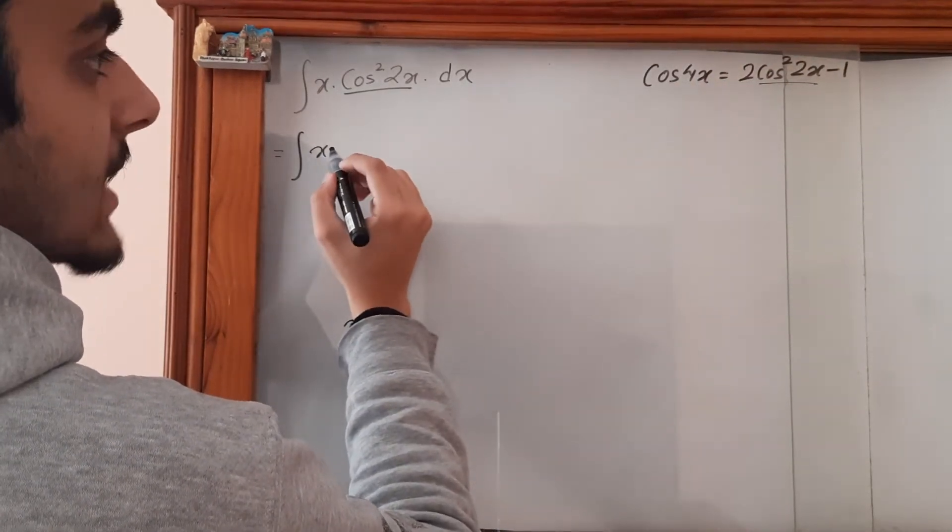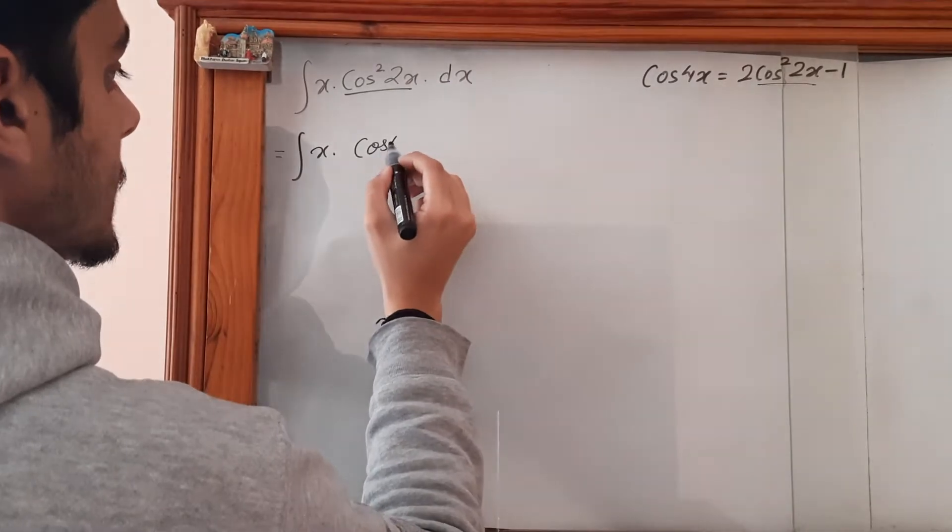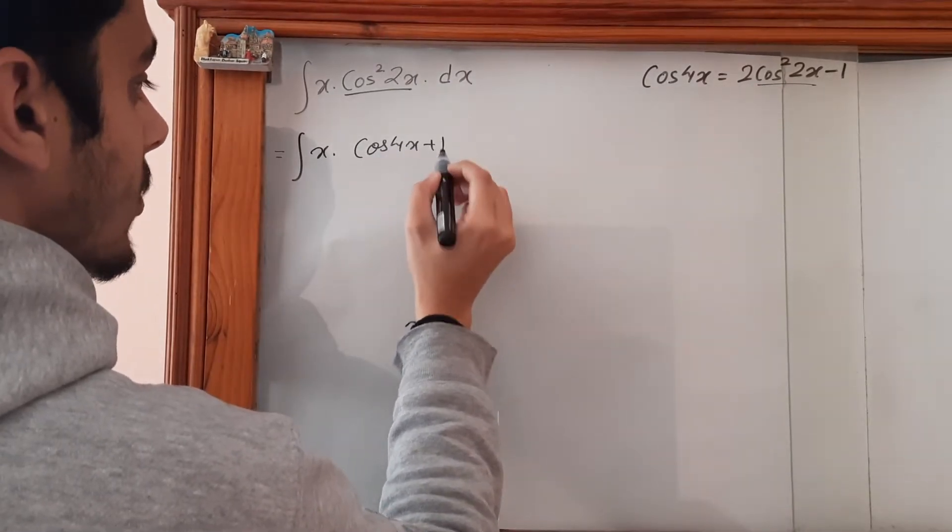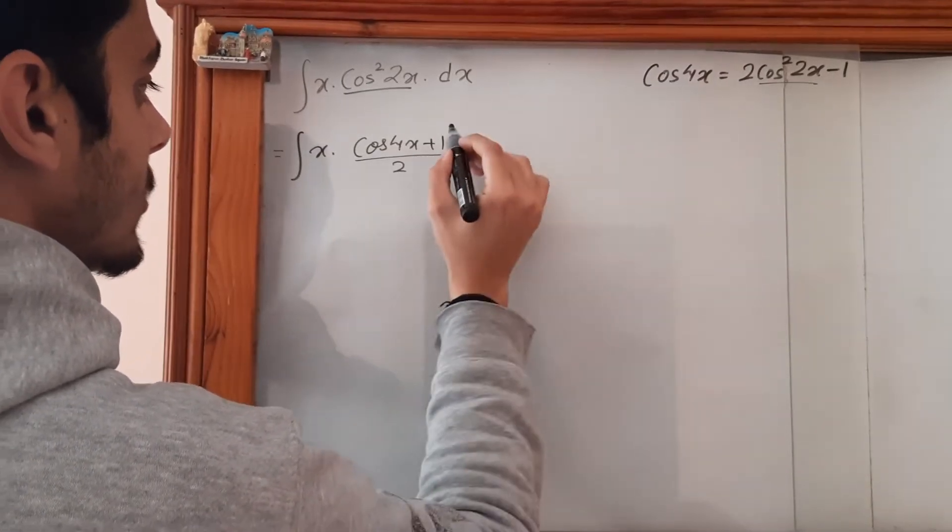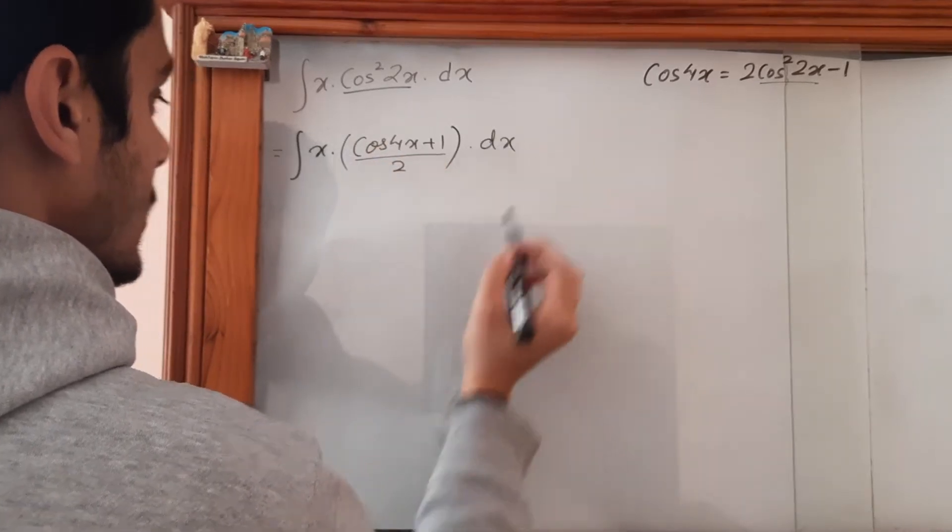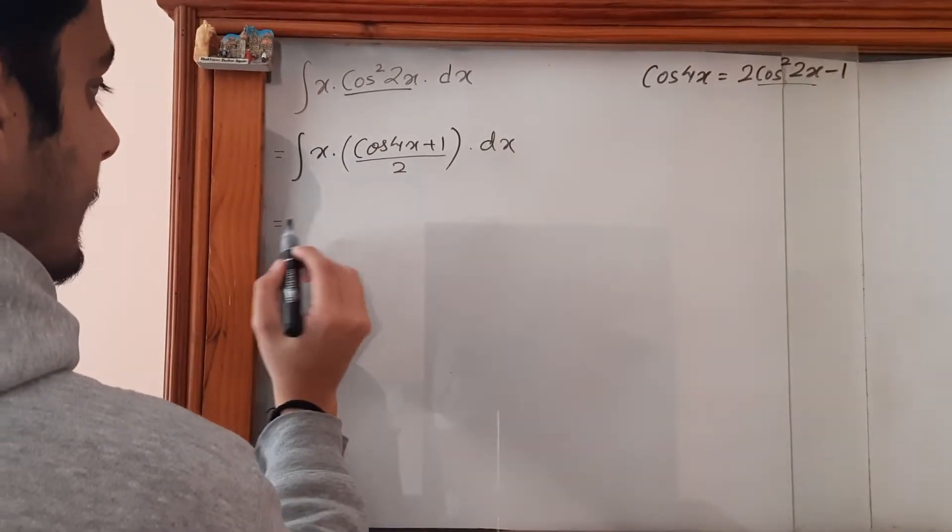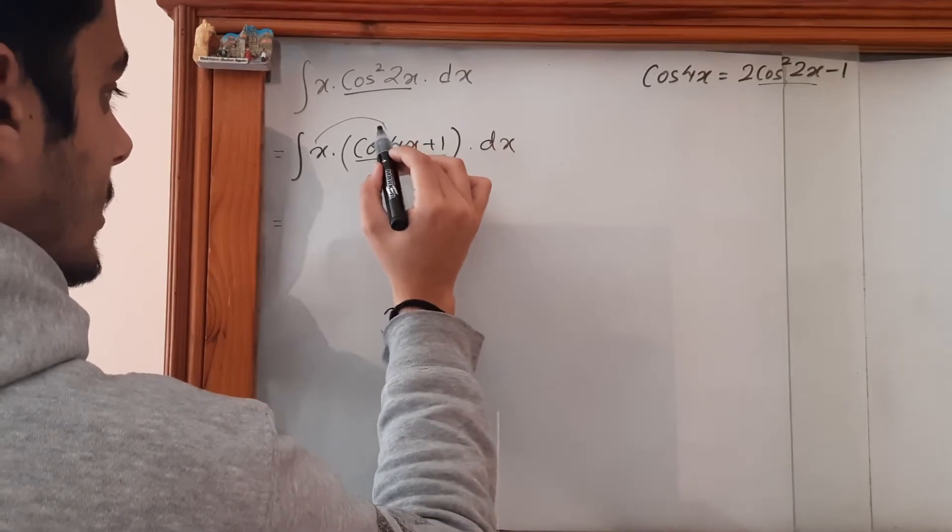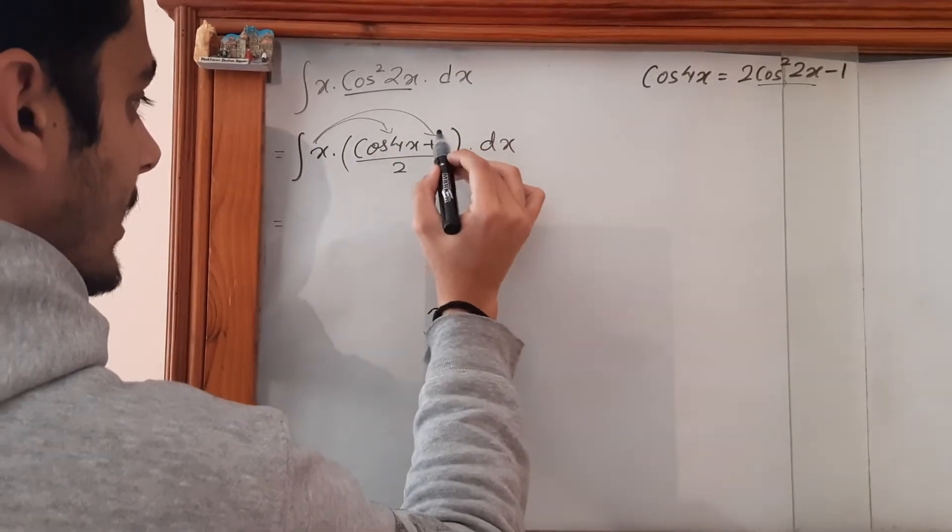So we have ∫x(cos 4x + 1)/2 dx. This multiplies out to give us two terms.